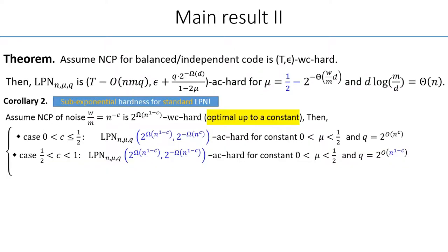More importantly, we obtain our result that was not known before. For instance, by setting the noise rate of NCP to N^{2-c}, and assume that it has almost optimal hardness. Namely, it nearly matches known attacks, up to a constant in the exponent. Namely, we get the desired result that sub-exponential hardness for standard LPN. The proof is quite straightforward, by setting the values for the parameters accordingly.